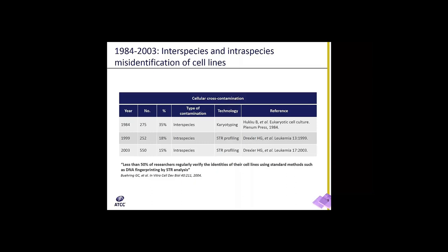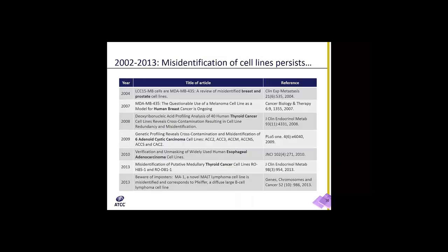In 1984, HUCU and colleagues looked at 275 cell lines using karyotyping and found that 45% were misidentified. Using STR profiling, Hans Drexler from the German collection DSMZ looked at 252 cell lines and found that 18% were misidentified. He increased that number to 550 in 2003, and again using STR profiling found that 15% were misidentified — notably, these were cell lines deposited directly from the originators. Gertrude Buehring, in her landmark paper published in 2004, stated that less than 50% of researchers regularly verified the identities of their cell lines using standard methods such as DNA fingerprinting by short tandem repeat analysis. The contamination persisted.